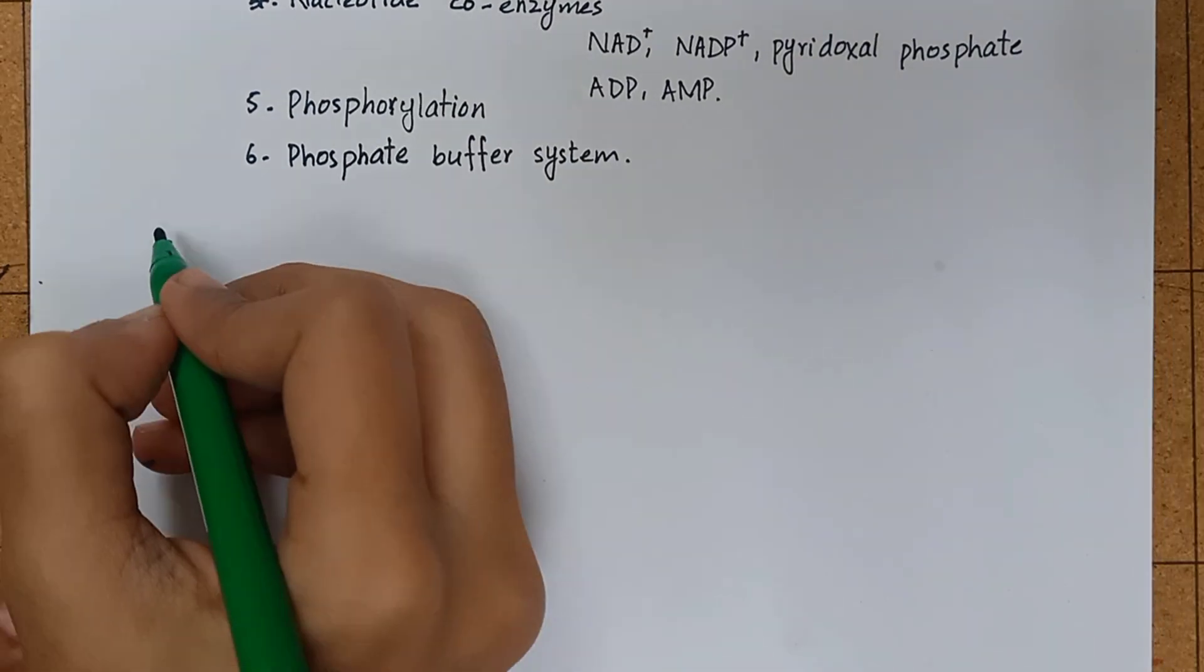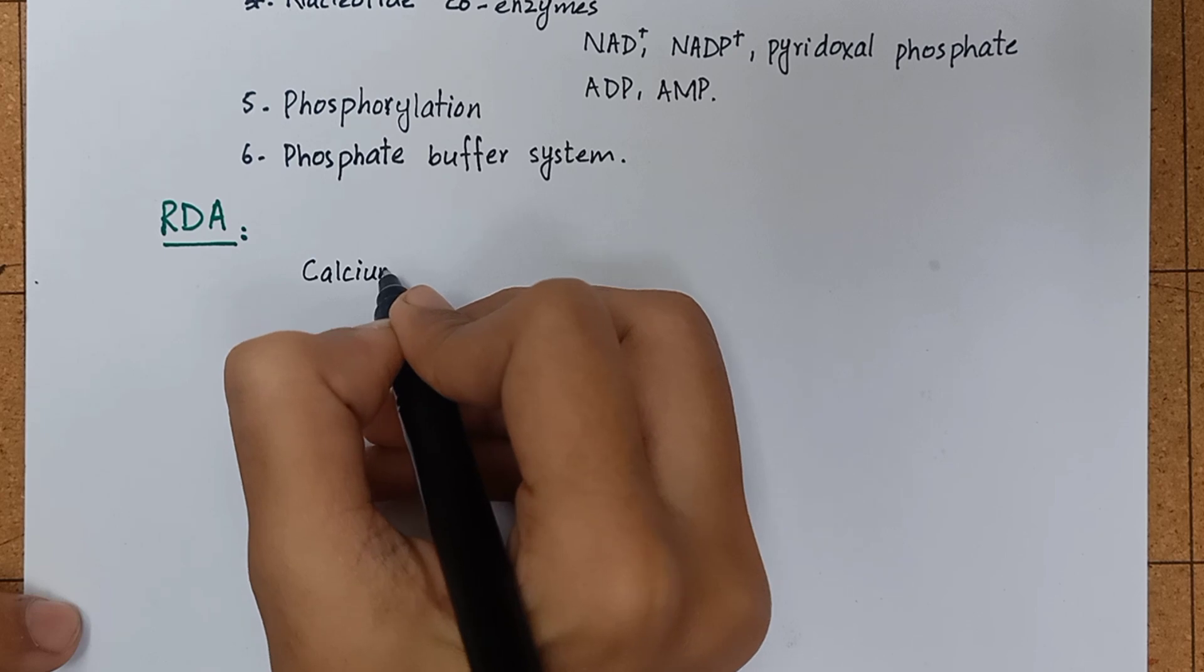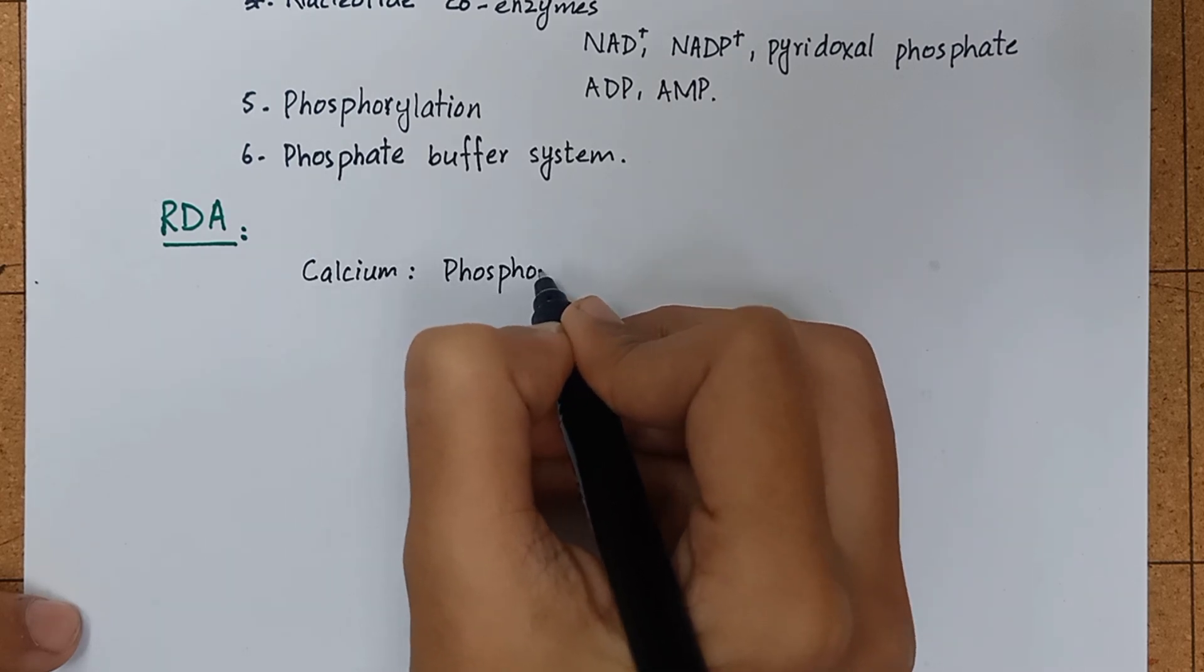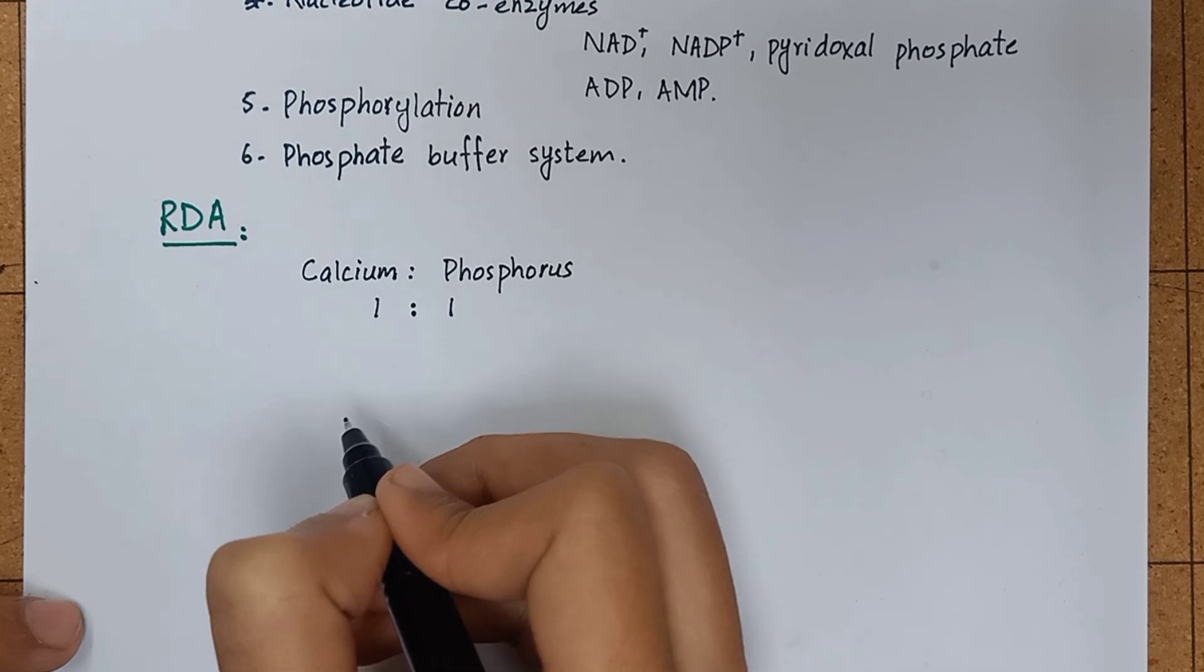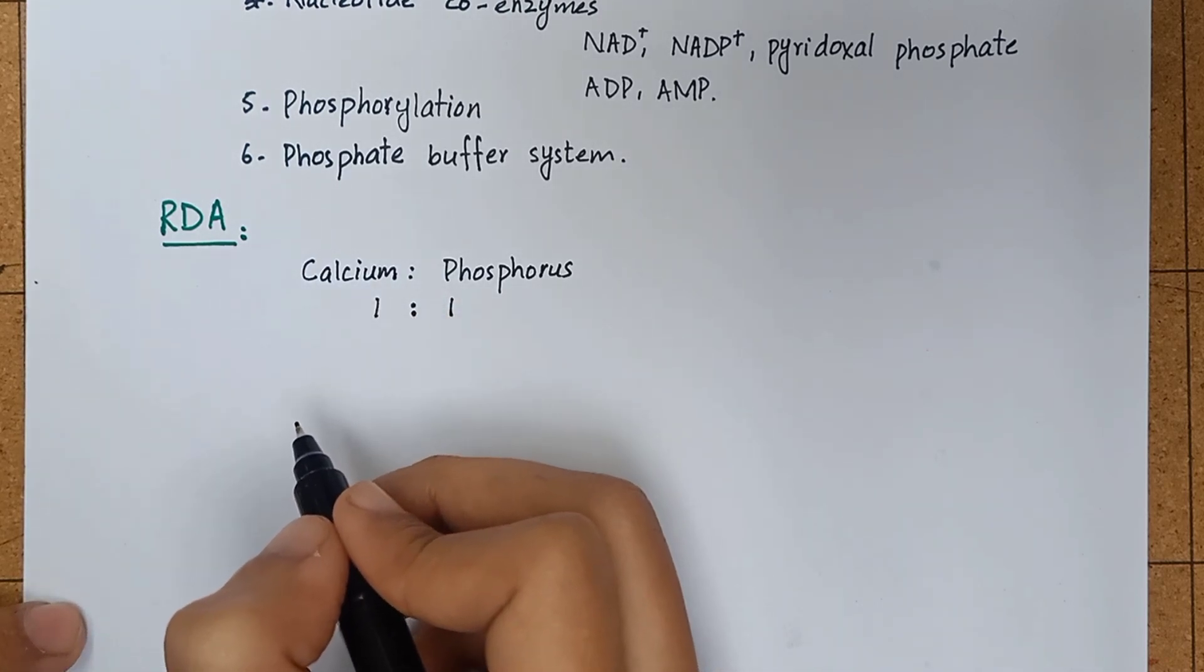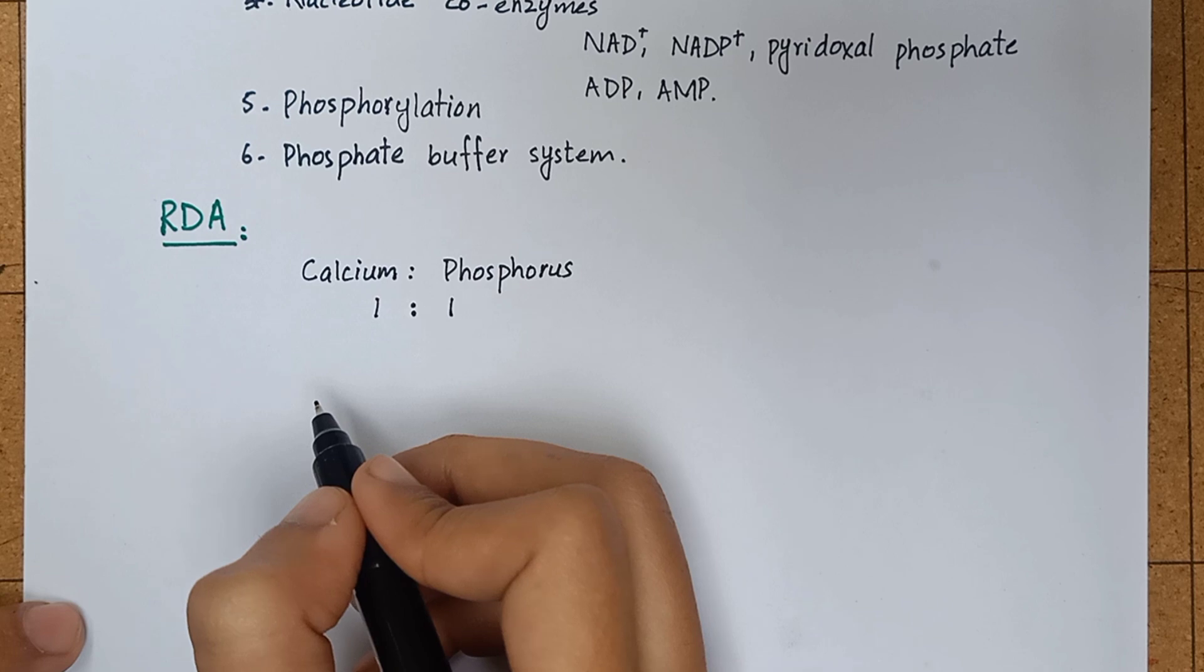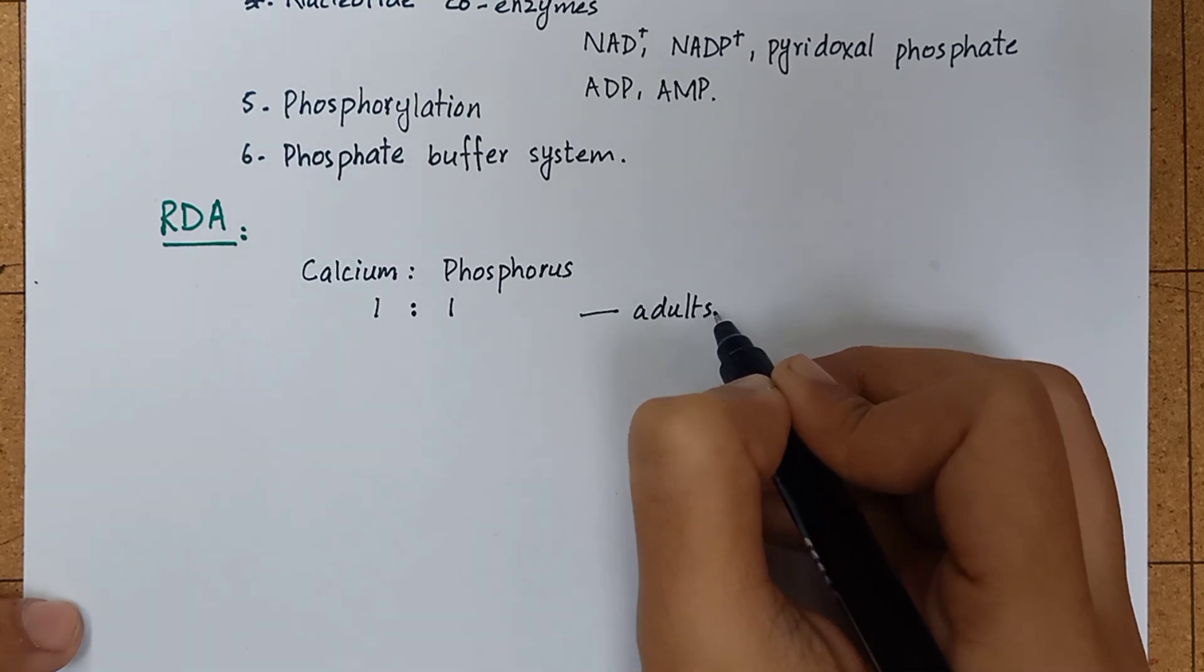Now coming to its dietary requirements. The recommended dietary allowance of phosphate is based on the intake of calcium. The ratio of calcium to phosphorus of 1:1 is recommended for an adult. Majority of natural foods have the distribution of calcium and phosphorus in 1:1. Therefore, adequate intake of calcium takes care of phosphorus requirement also.